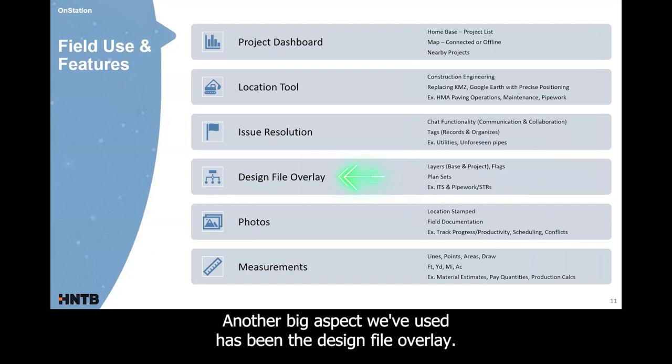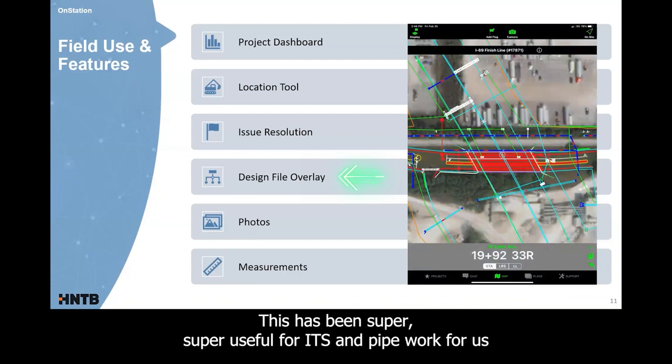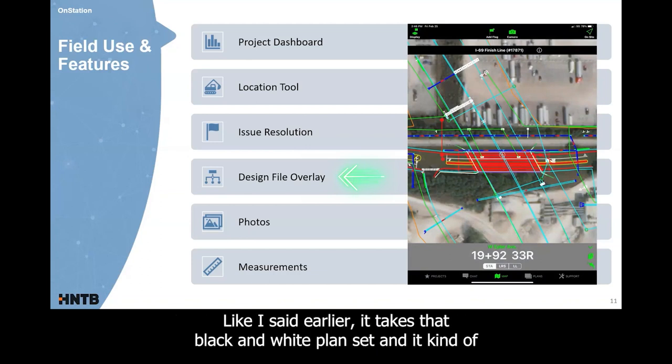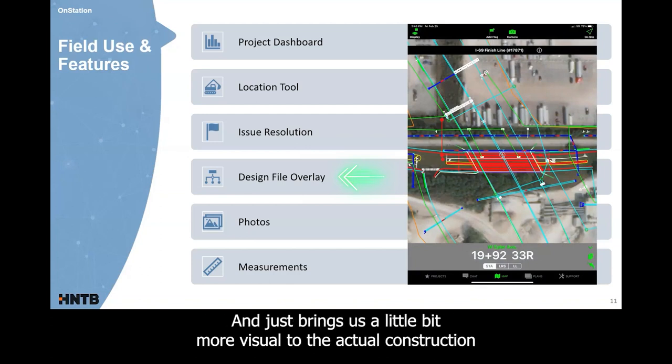Another big aspect we've used has been the design file overlay. So with OnStation you get all your alignments but you also get your CAD files to overlay so you can see those different layers of your base and your project maps. Your plan sets are also in there. You can put specifications, standard drawings, anything you want. This has been super useful for ITS and pipe work for us to see where things are going to determine if there's any conflicts in the field. Like I said earlier, it takes that black and white plan set and it kind of puts it in color overlaid on a satellite image with the GPS added on top of that and just brings a little bit more visual to the actual construction that needs to happen.